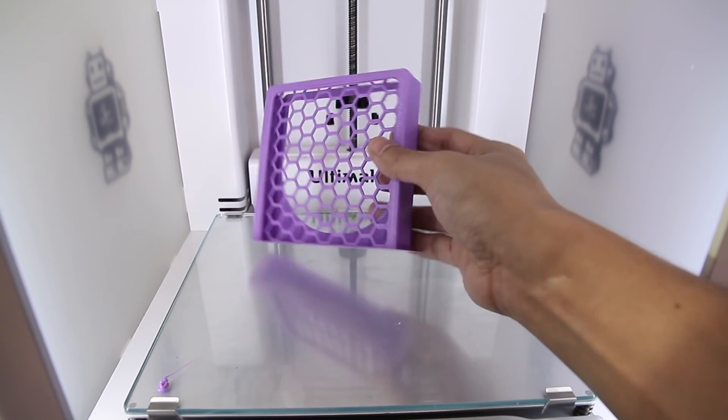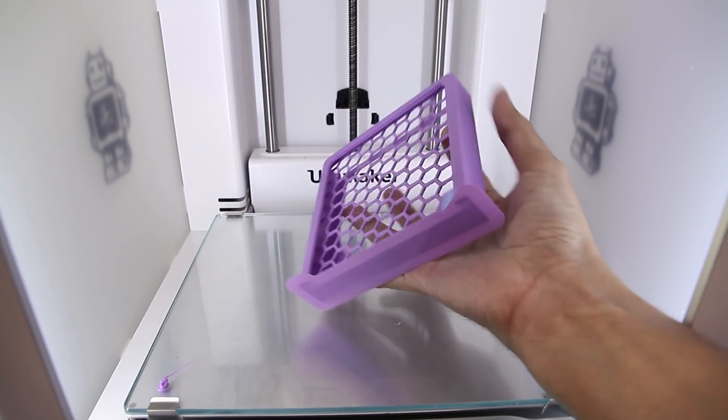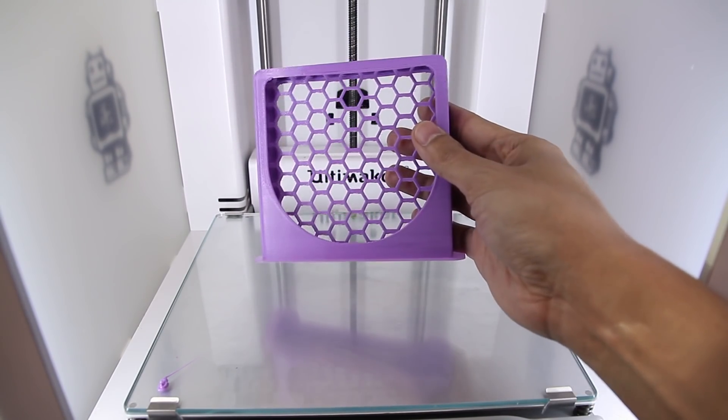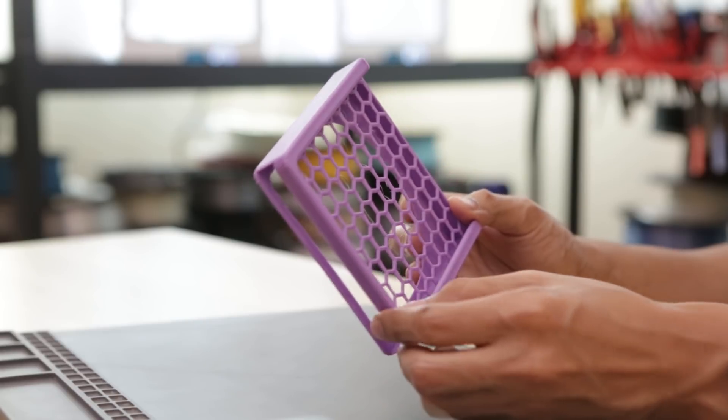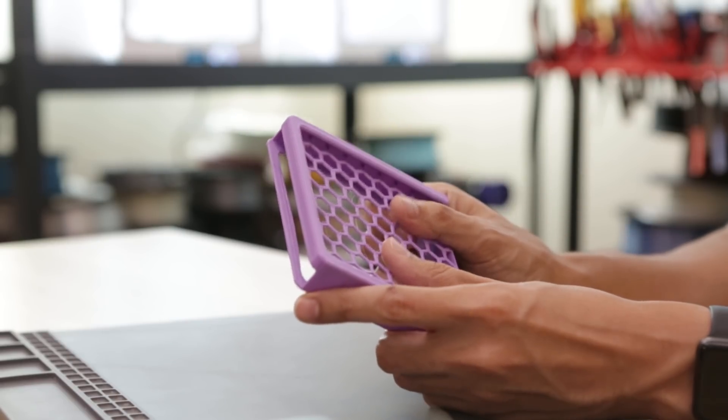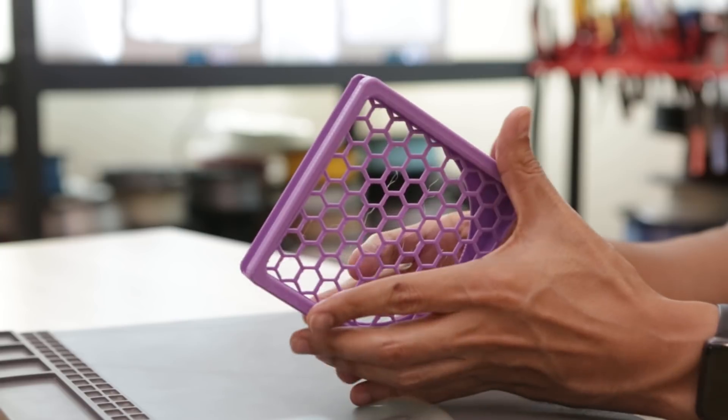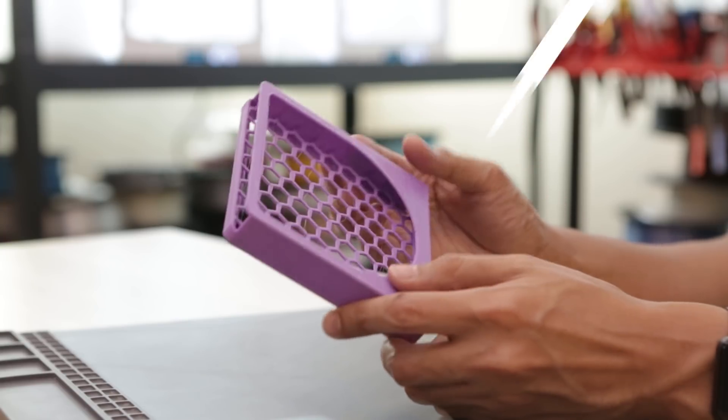Once the bed has fully cooled down, the part becomes much easier to remove. The bridging on this part was a bit extreme and surprisingly didn't need any cleanup. For a full list of slice settings, be sure to check out our guide linked in the description.